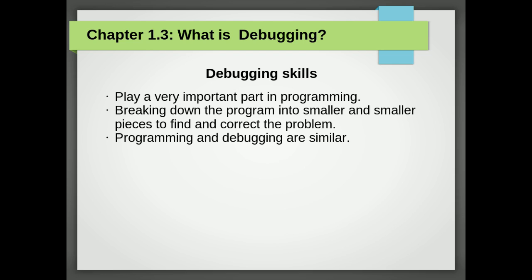Debugging is also like an experimental science. Once you have an idea of what is going wrong, you modify your program and try again. If your hypothesis was correct, then you can predict the result of the modification and you take a step closer to a working program. If your hypothesis was wrong, you have to come up with a new one. As Sherlock Holmes pointed out: when you have eliminated the impossible, whatever remains, however improbable, must be the truth.